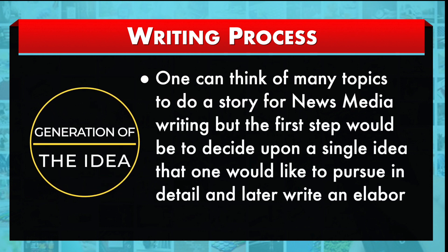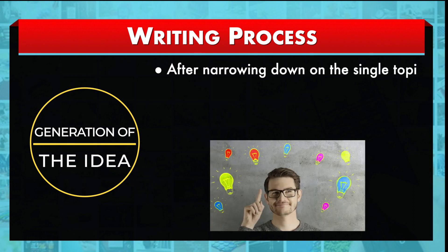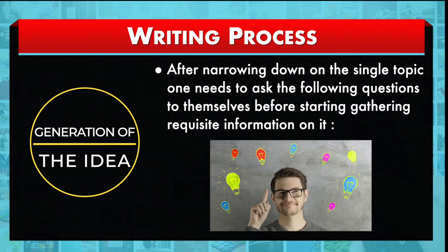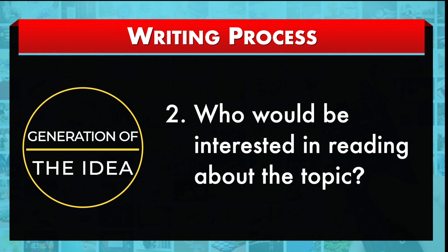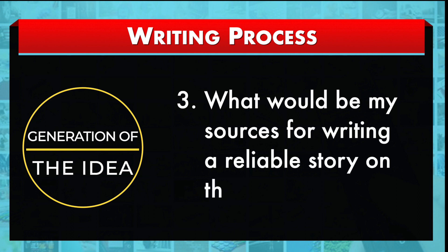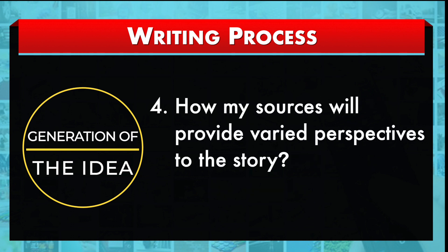Let us discuss the generation of the idea. One can think of many topics to do a story for news media writing, but the first step would be to decide upon a single idea that one would like to pursue in detail and later write an elaborate article on it. After narrowing down on the single topic, one needs to ask the following questions: first, why is this topic relevant at present? Second, who would be interested in reading about the topic? Third, what would be my sources for writing a reliable story on the topic? And fourth, how will my sources provide varied perspectives to the story?